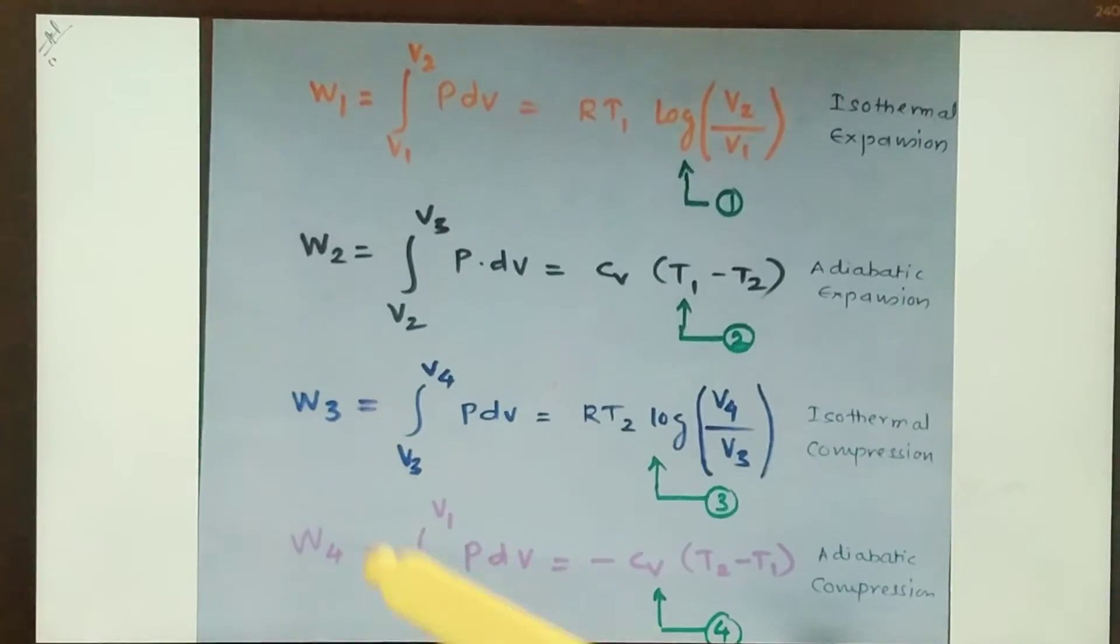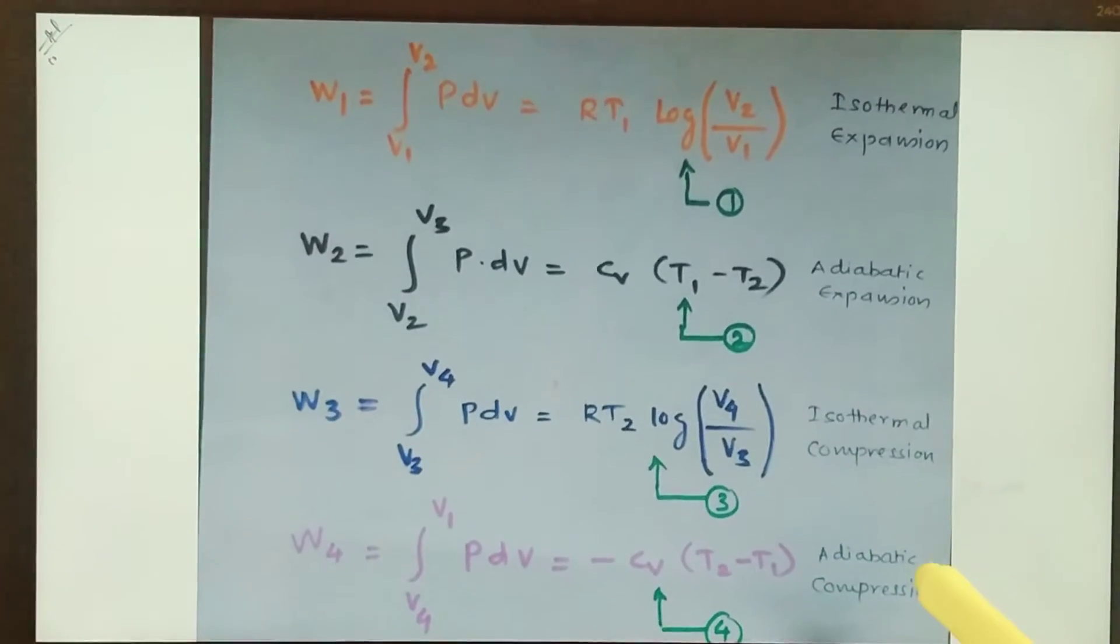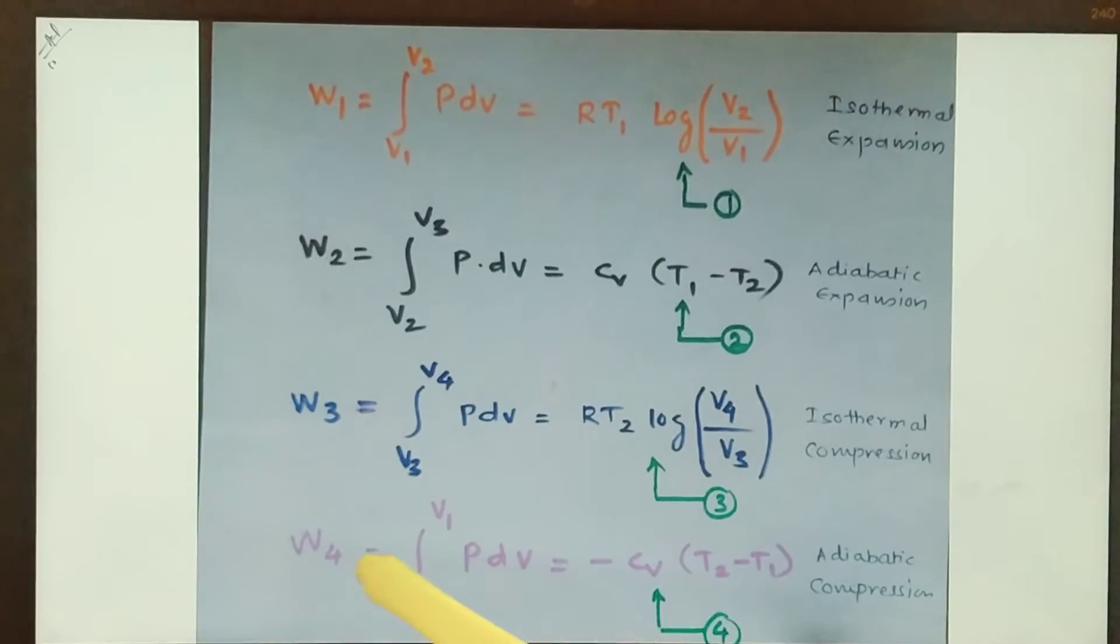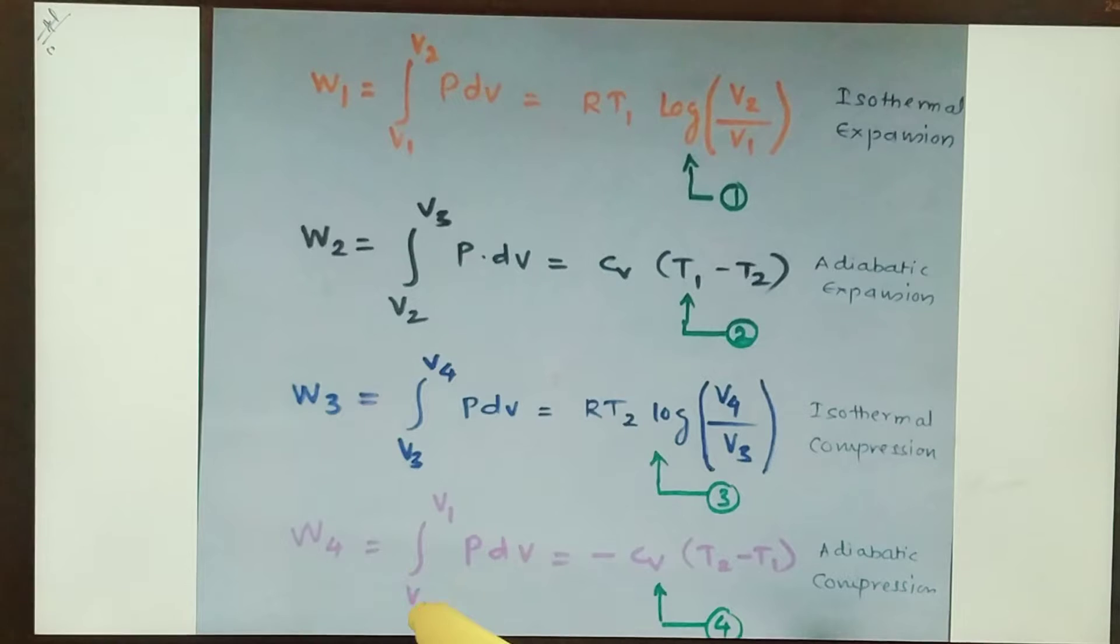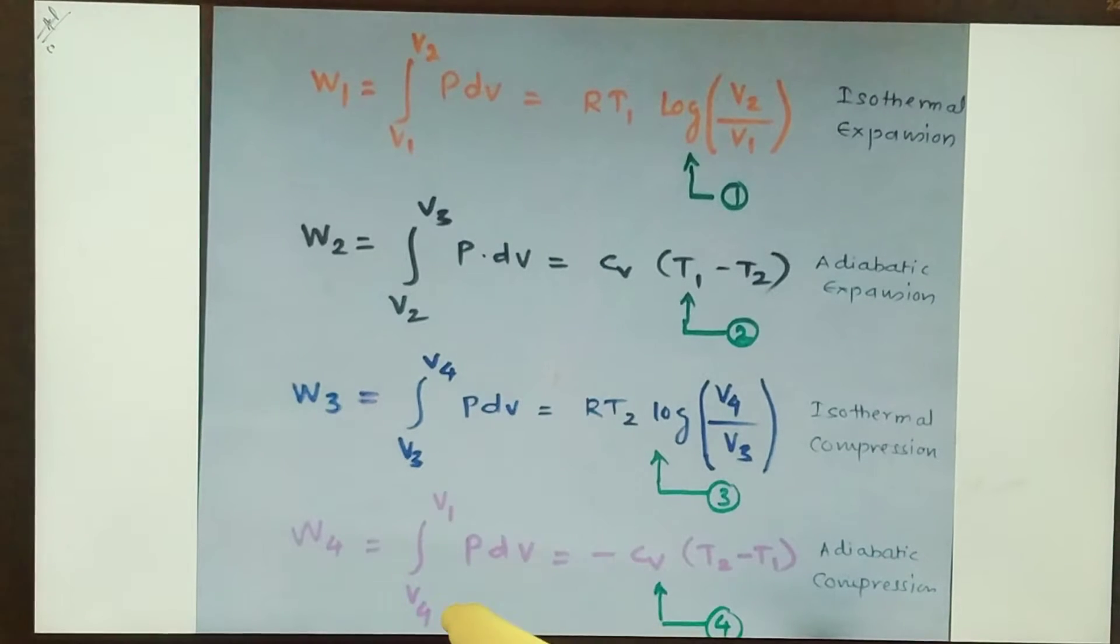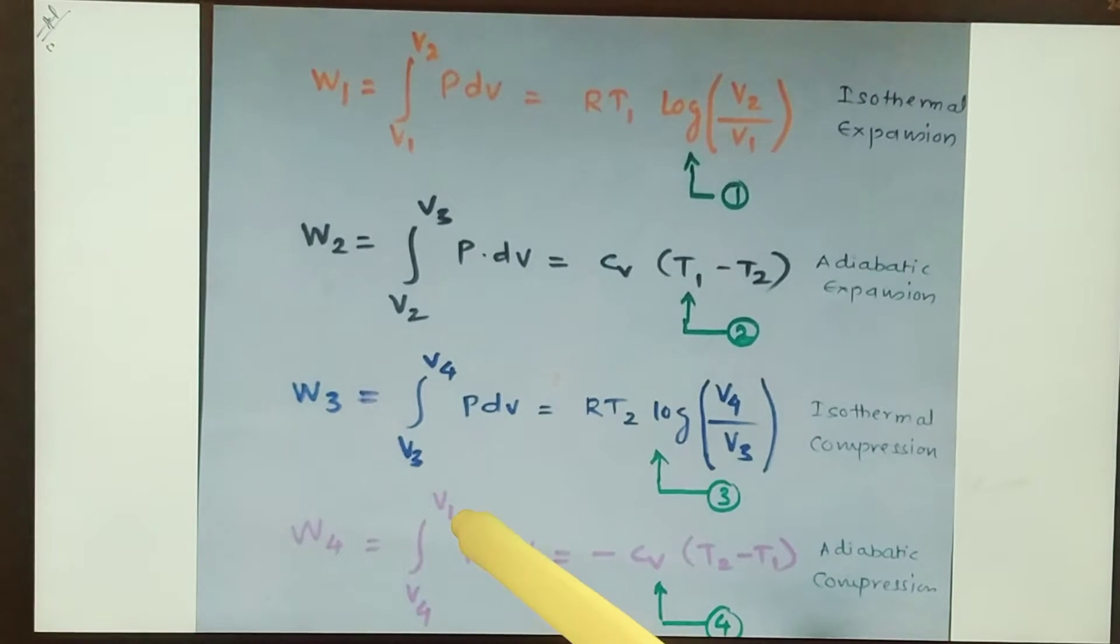And the work done during adiabatic compression is W4, which is equal to integration from 4 to 1. Look at this 4 to 1. We are completing the cycle. We are going from volume V4 to V1. So V4 to V1 and integration of PdV.